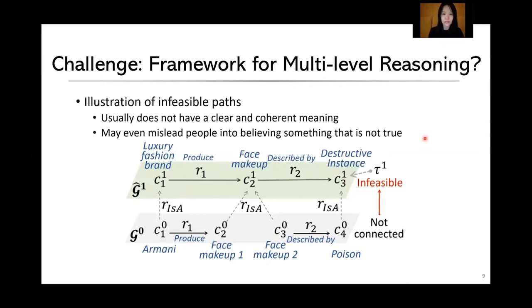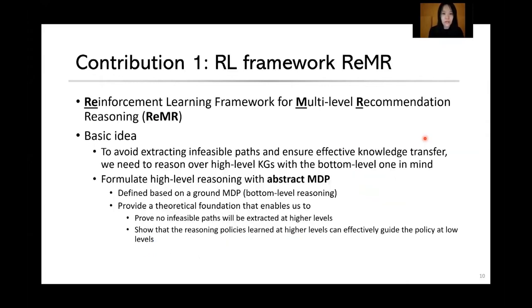To solve these problems, we design a reinforcement learning framework for multi-level recommendation reasoning called RIMER. Our idea is to avoid extracting infeasible paths and ensure effective knowledge transfer by reasoning over high-level KGs with the bottom-level KG in mind. We formulate high-level reasoning with an abstract MDP, which is defined based on the ground MDP — in our case, the bottom-level reasoning.